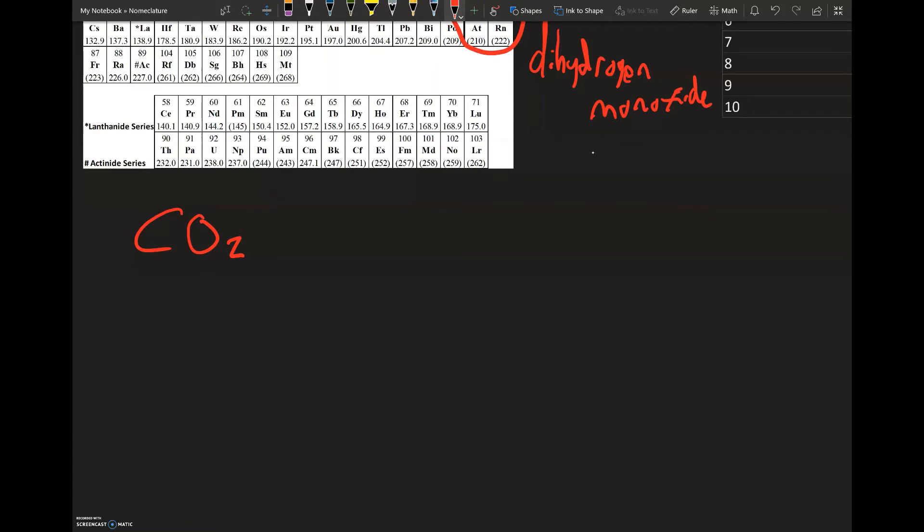This is the one time where you don't have to use mono. So this is carbon dioxide. The dioxide tells you that you have two oxygens, and just stating carbon with no prefixes in front automatically represents one carbon.